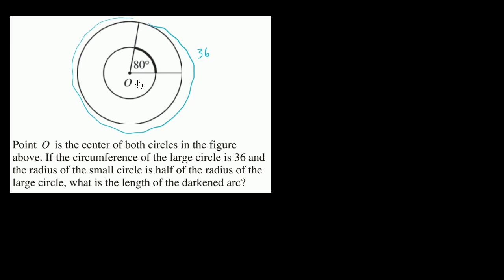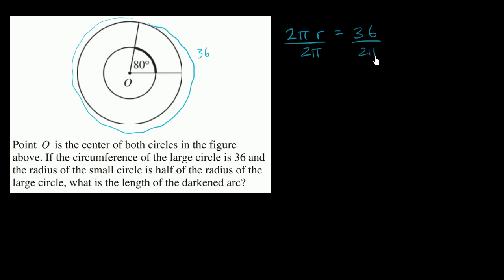If you have half the radius, you're going to have half the circumference. We could even solve for the radius of the larger circle: 2π times its radius equals 36, so dividing both sides by 2π, the radius of the larger circle is 36 divided by 2π, which is 18 over π.